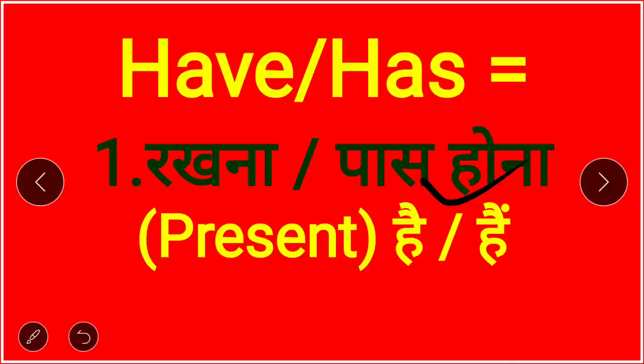This is the important thing to understand. When have or has is used in the sense of 'rakhna' or 'pass hona' (to possess), it will only and only be in the present tense — vartamankal. The sentence will end in 'hai'.